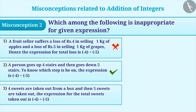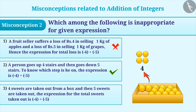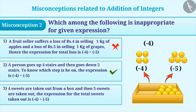The third statement shows that initially 4 sweets are taken out and then another 5 sweets are taken out from the box. Since the sweets are taken out from the box, this is represented as a negative sign. Therefore, its value can be calculated by adding minus 4 and minus 5. Thus, statement 3 is also correct for the given expression, which means it cannot be the answer to the given question.